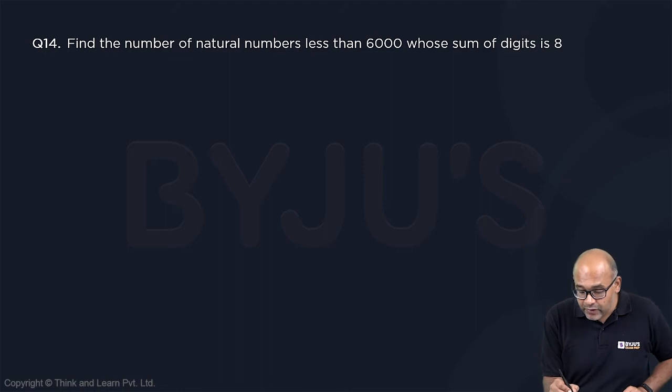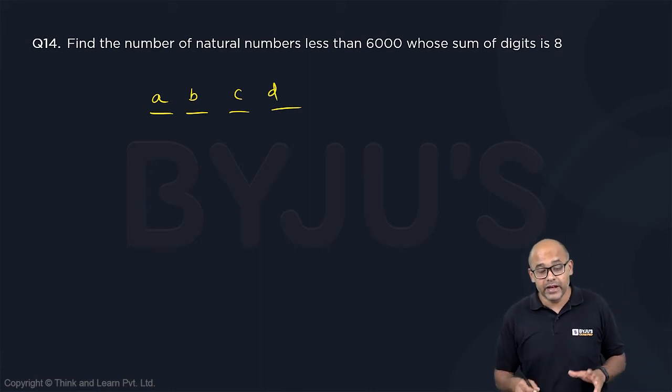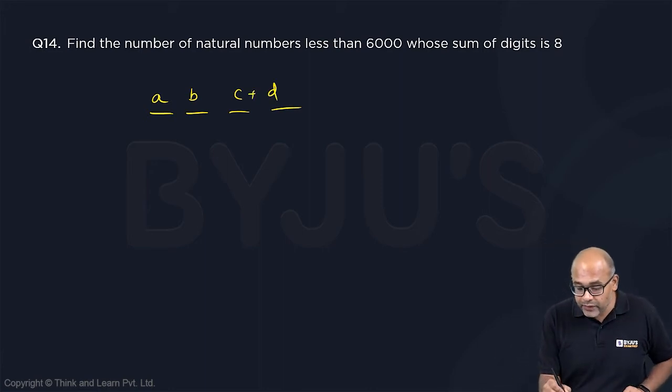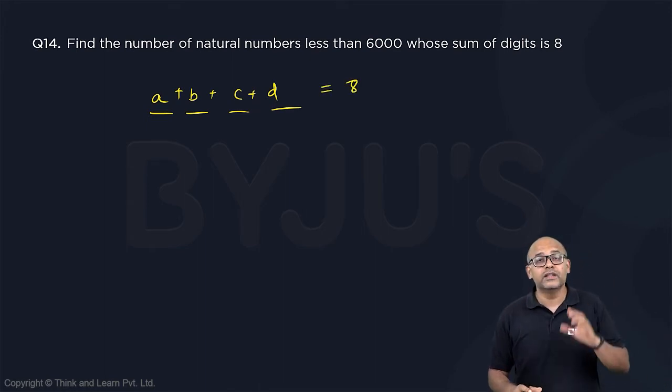So let us take a four digit number and I will call the digits as ABCD. Now I want the sum of these digits to be 8. So let me first find the sum of the digits to be 8. What are these kinds of numbers?